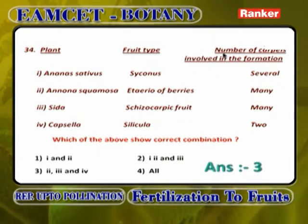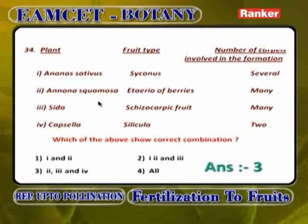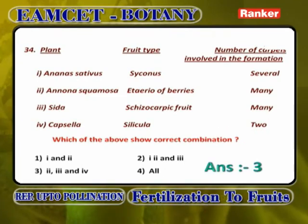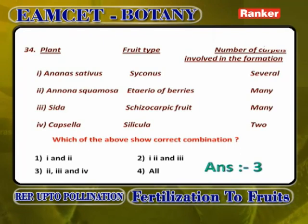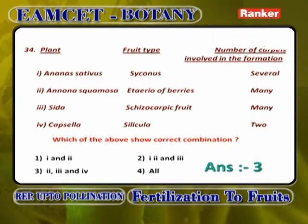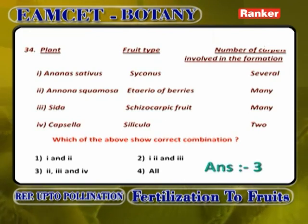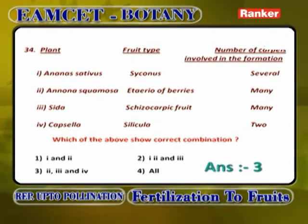Plant/fruit type/carpels table: Ananas sativa — Syconus, several is wrong (Ananas sativa/pineapple fruit is sorosus, not syconus). Annona squamosa — eterea of berries, many is correct. Sida cardifolia — schizocarpic fruit, many is correct. Capsella bursa-pastoris — silicula, 2 is correct. So combinations 2, 3, and 4 are correct; first combination (Ananas sativa as syconus) is wrong. Answer: 3.